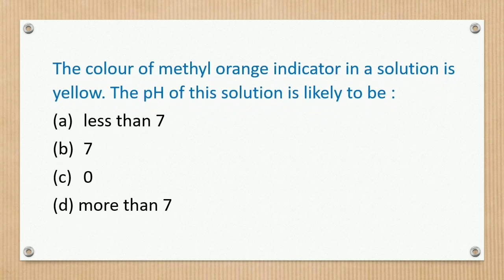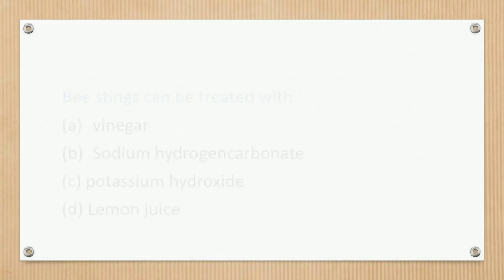The color of methyl orange indicator in a solution is yellow. The pH of this solution is likely to be more than 7.